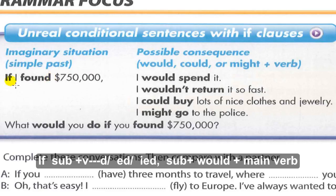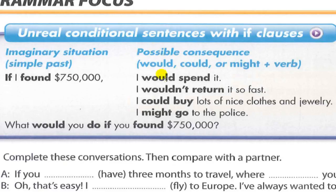So the structure is: If + subject + verb in simple past, [comma] + subject + would / could / might + main verb. We use this to express unreal conditional sentences. The most common modal is 'would.' 'I would' is contracted to 'I'd.' We also use 'could' and 'might.'